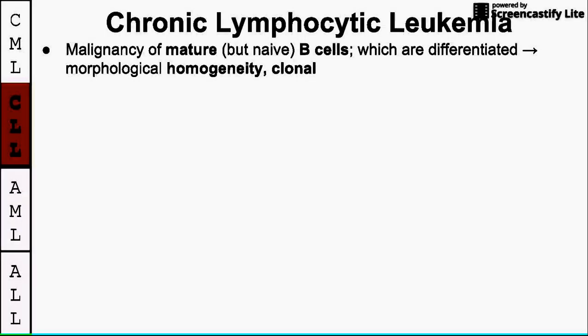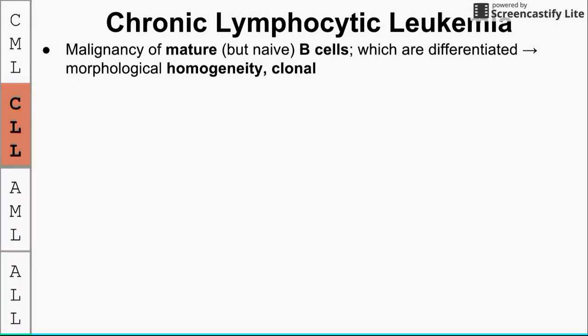Next is chronic lymphocytic leukemia, CLL. This is a malignancy of mature B cells — fully differentiated cells — as opposed to the stem cell affected in CML. The disease shows homogeneity and is clonal, meaning you'll see all one type of cell on the blood smear. These are all naive B cells that haven't been exposed to antigen, but they're all expressing the same light chain.